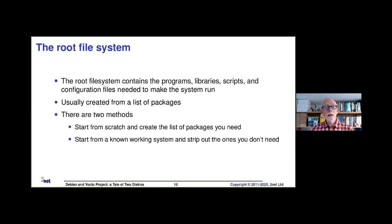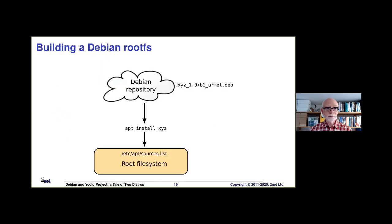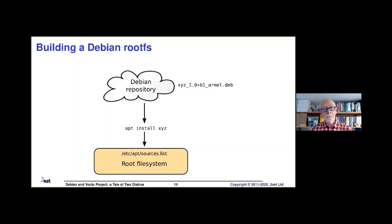There are two ways of doing this: you can either start small and get bigger — start with nothing and list one by one the packages you need, using tools that work out the dependencies — or you start bigger and slim down, starting with a known working system like a desktop distro and stripping out what you don't need. From the Debian point of view, you have your root file system and you can do things like 'apt install XYZ', which fetches it from the configured Debian repository and stores it into your root file system.